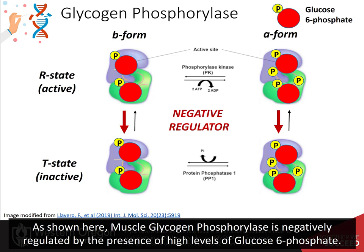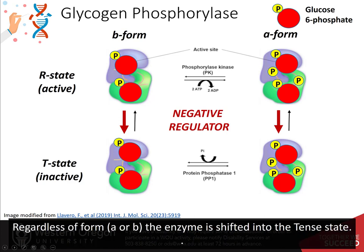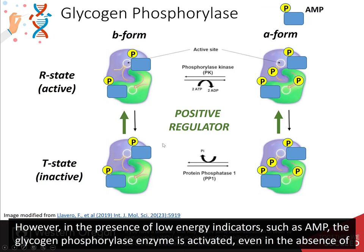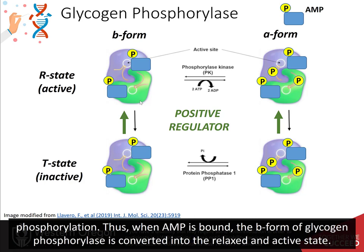As shown in the diagrams, muscle glycogen phosphorylase is negatively regulated by the high presence of glucose-6-phosphate — regardless of the A or B form, the enzyme shifts into the tense state. A similar phenomenon occurs in the presence of high levels of ATP, again showing inhibition in the presence of high energy. However, in the presence of low energy indicators such as AMP, the glycogen phosphorylase enzyme is activated even in the absence of phosphorylation. Thus, when AMP is bound, the B form of glycogen phosphorylase is converted into the relaxed and active state.